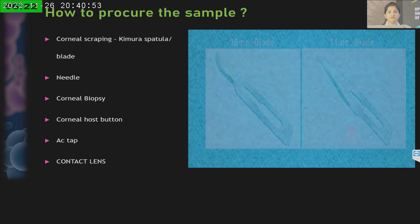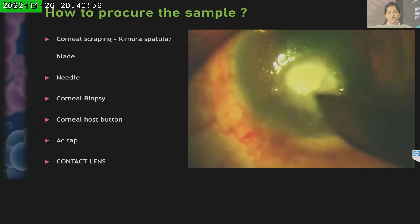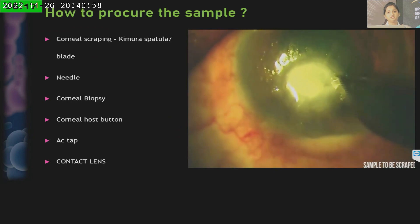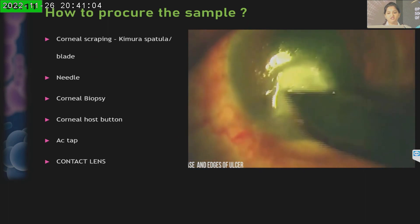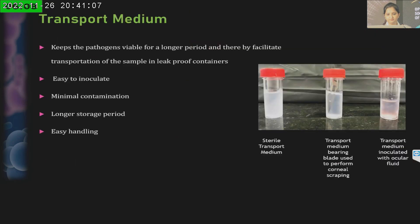Preferably a number 15 blade is used because number 11 blades are very sharp. Once the pre-anesthetic drop is instilled in the patient's eye, we place them on the slit lamp and scraping is done from the base of the ulcer as well as from the edges. Recently we have transport media wherein we can place these samples and transport them to tertiary centers with accessibility for ocular microbiology. Samples in these transport media can remain viable for 24 to 48 hours without major contamination, helping everyone access ocular microbiology.